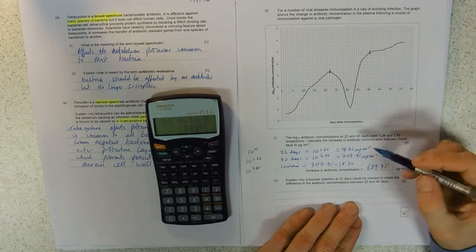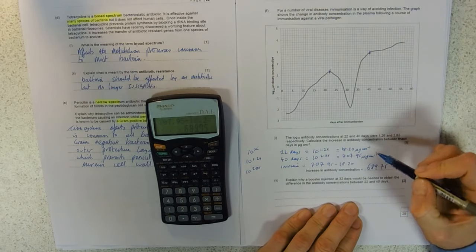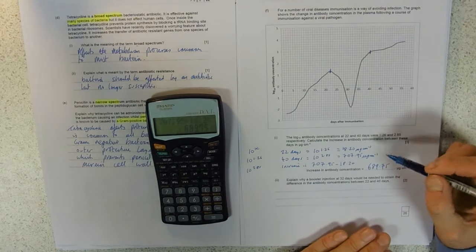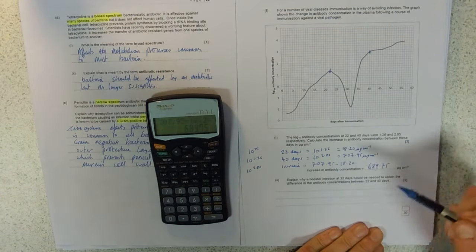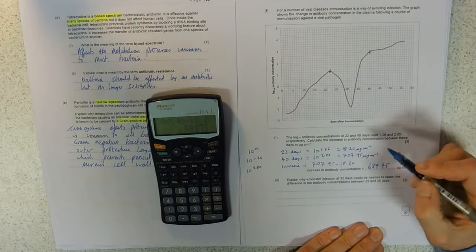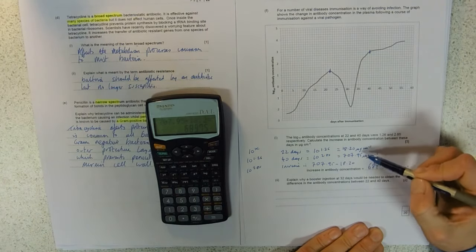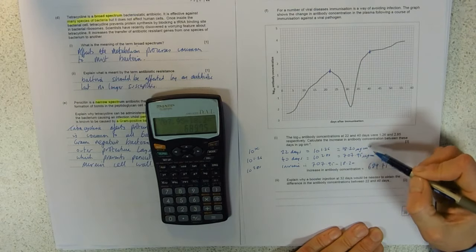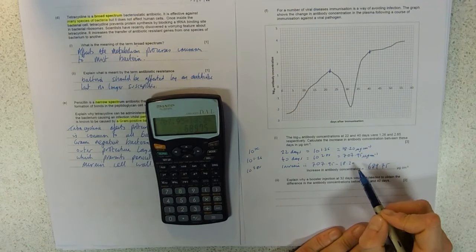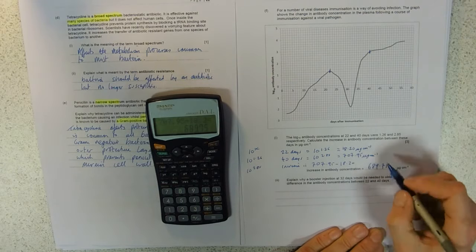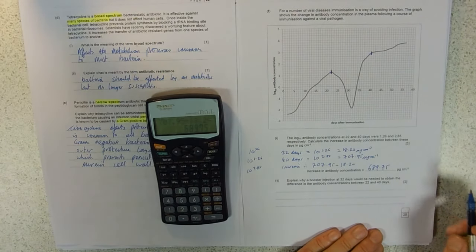The marks are allocated: one mark for calculating 10 to the power of 1.26 using your calculator, another for doing it again for 40 days, then a separate mark for the increase. Don't give up with these because grade boundaries are pretty close sometimes and this mark could be the difference. Even if you're not sure you're doing the logs right, still do it. Calculating an increase for one mark is pretty generous and they'll give you error carried forward. Always do it anyway even if your numbers aren't right - you might get that last mark.